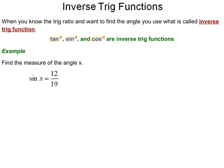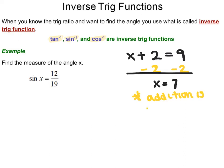Usually if I were to solve a problem like this, if I had x plus 2 equals 9, we would subtract 2 from both sides so that x equals 7. The reason that works is addition is the inverse of subtraction.